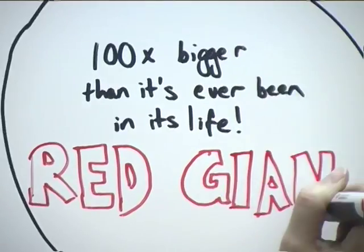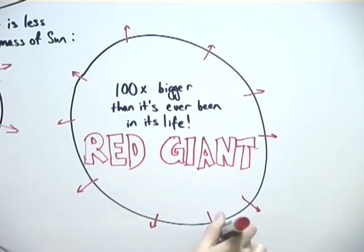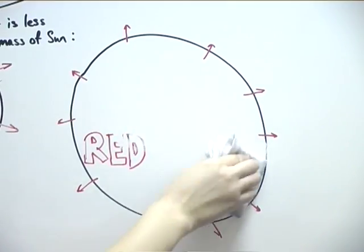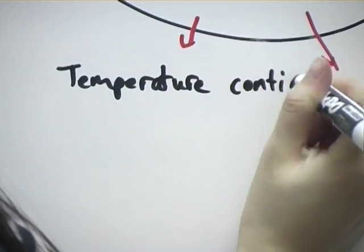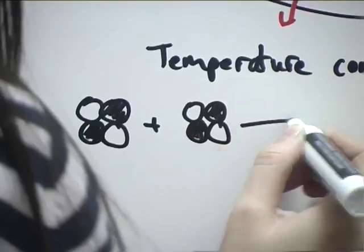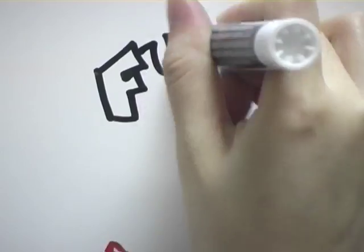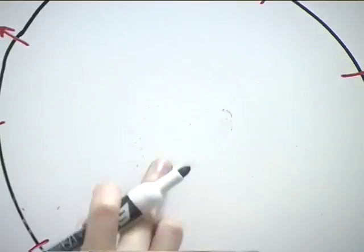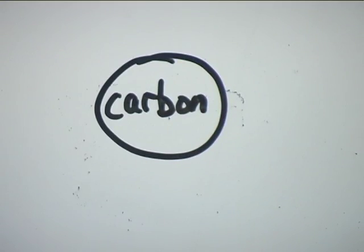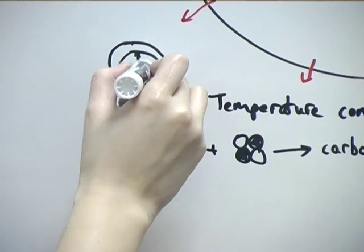While the outer layers of the red giant continue to expand, the core is still contracting, so the temperature continues to increase. The temperature gets high enough for helium fusion to begin, so that an even heavier element, carbon, forms.